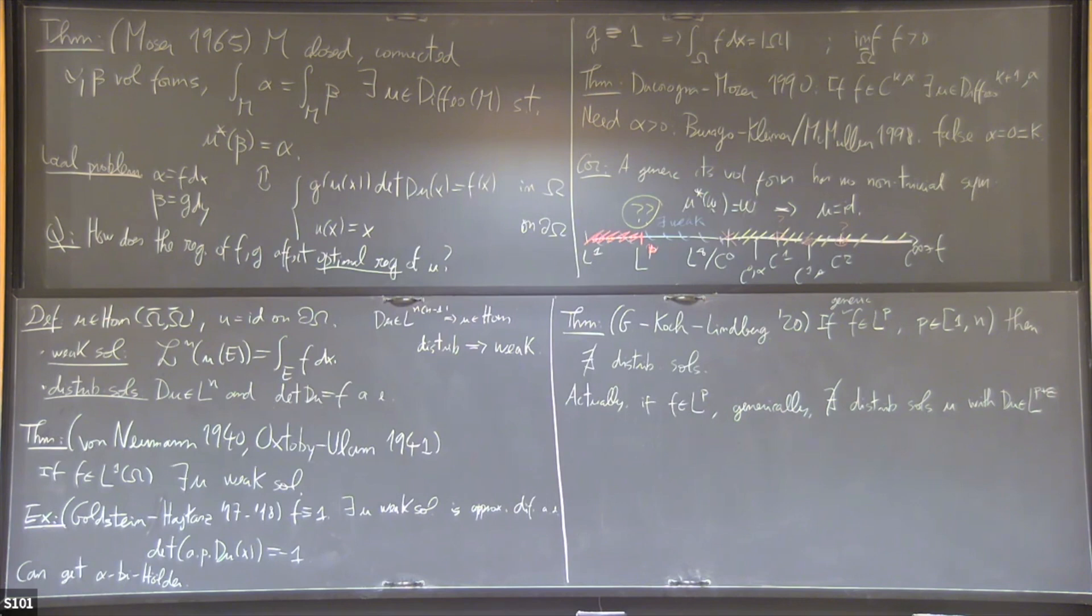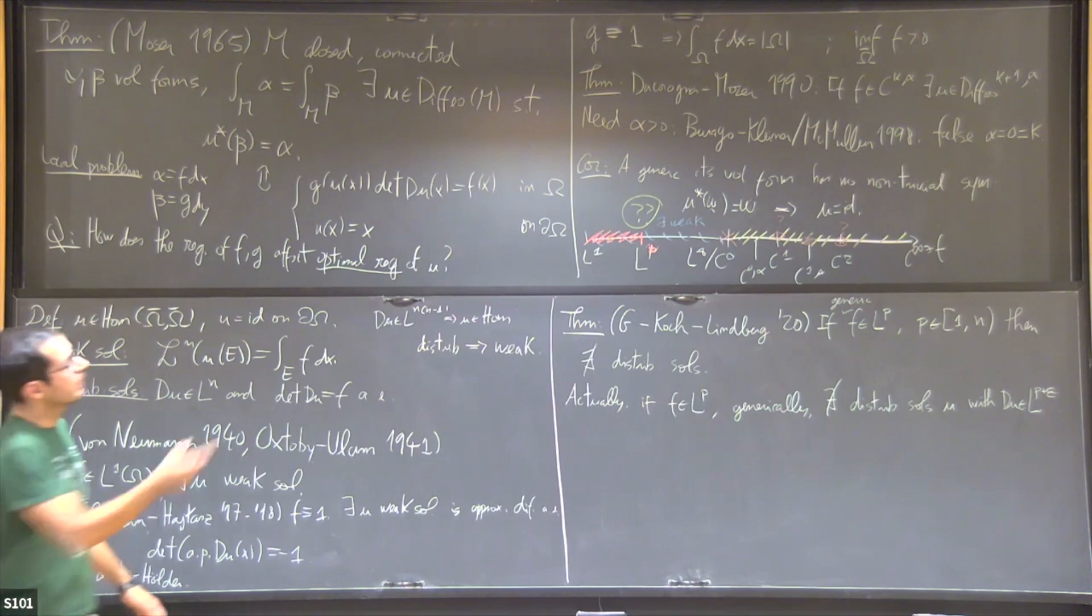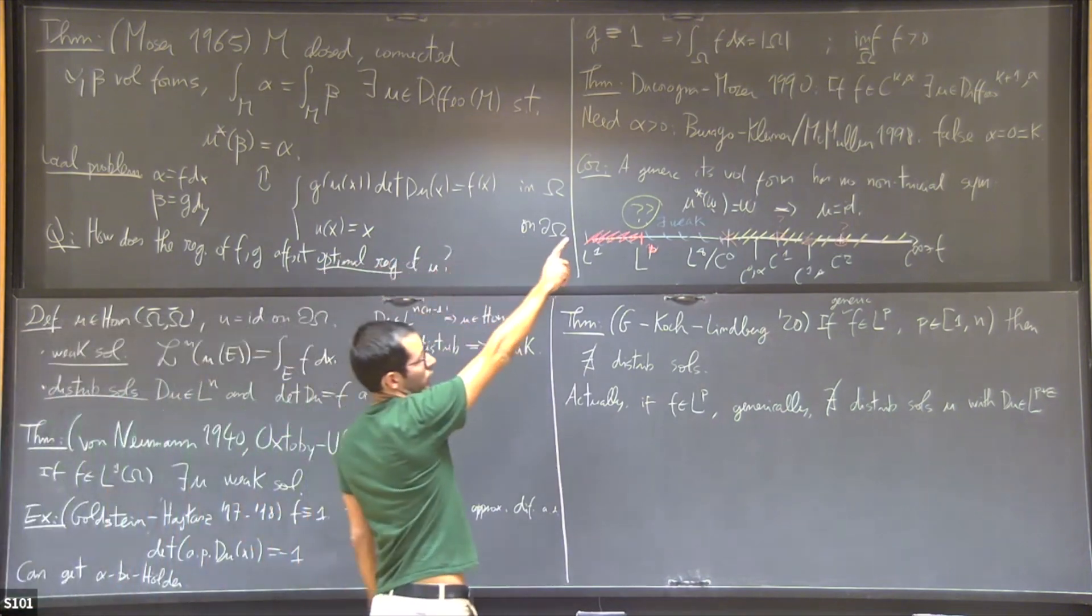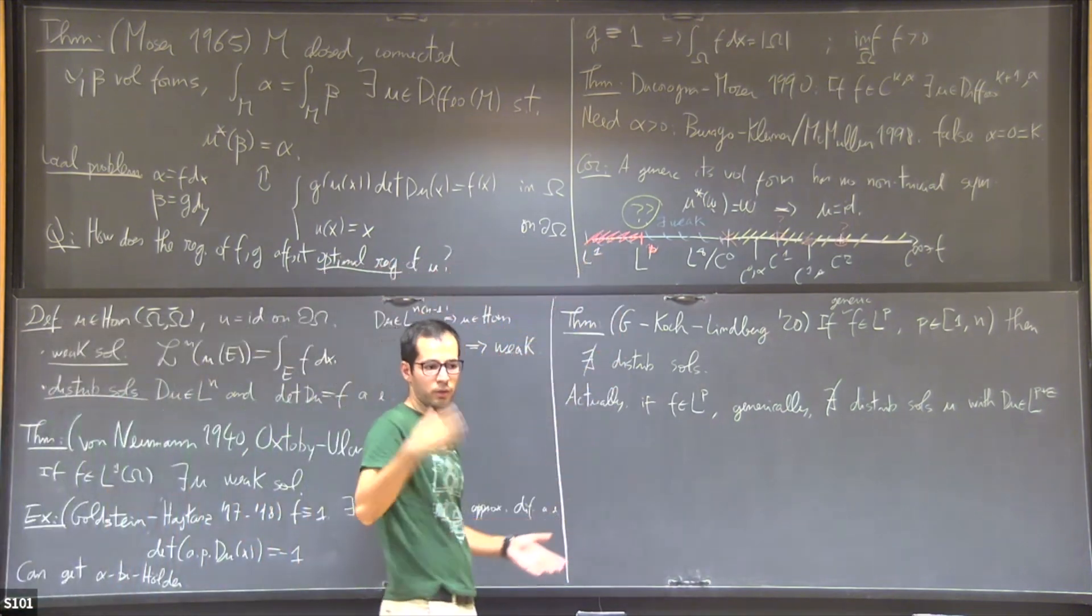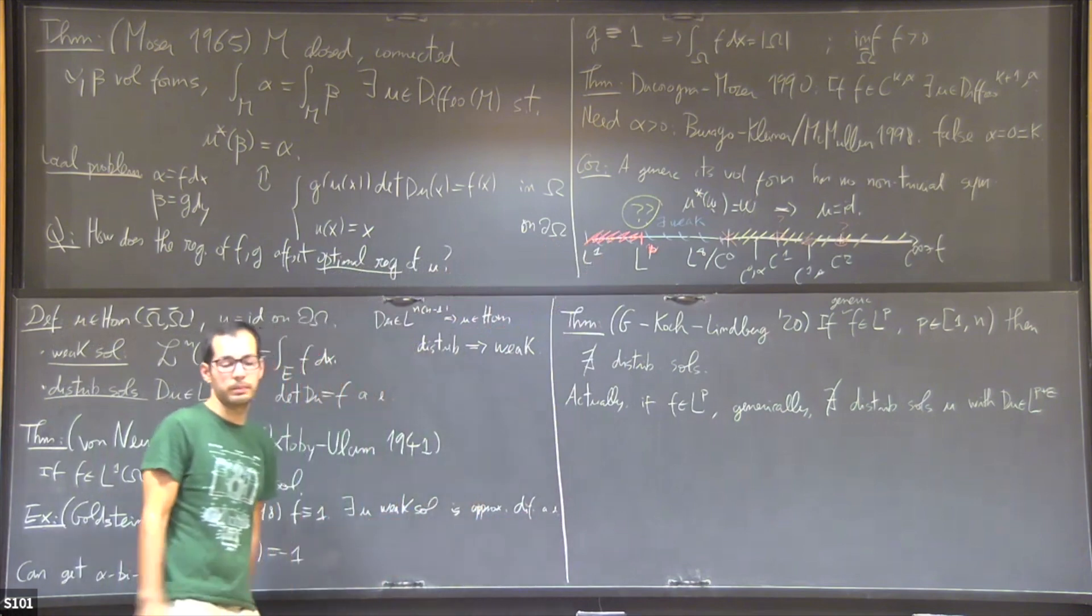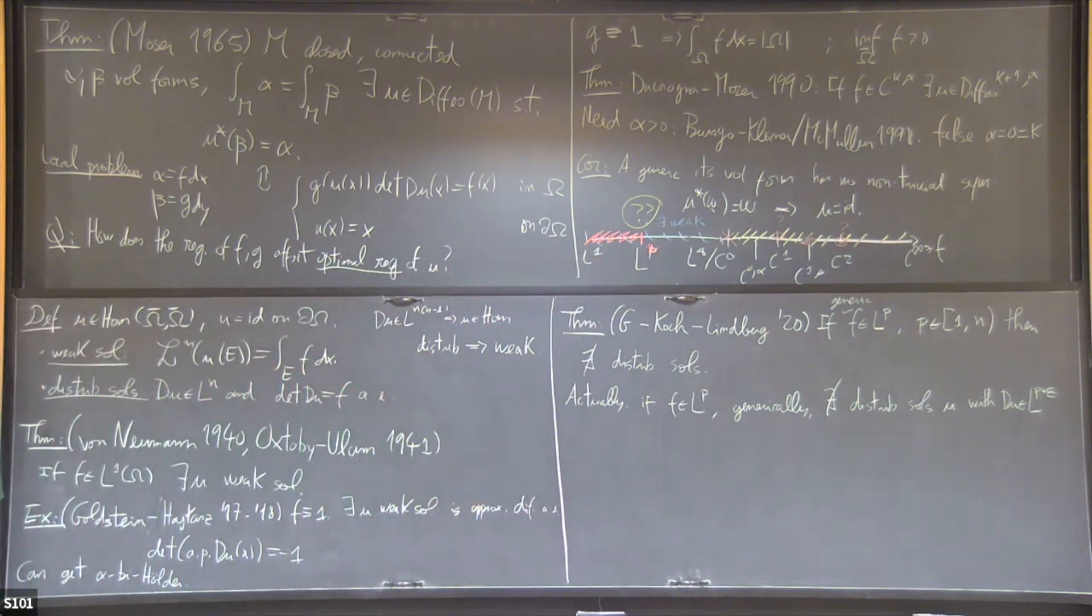I have a question. What do you mean by generic? In the Baire sense. So take a generic data in L^p and it doesn't have solutions. But which topology are putting on L^p? In the L^p topology. The strong L^p topology. So essentially you have to look at the subspace of L^p which is those guys which have the volume constraint and are uniformly positive. You put the L^p metric. Okay. Thank you. Thanks.